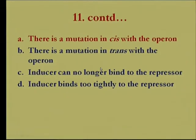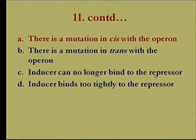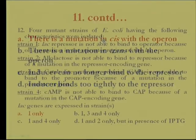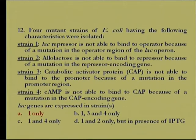Such oc mutations are generally cis in nature. Option B — mutation in trans — cannot be correct. Option C — inducer can no longer bind to the repressor — is not possible because the repressor is active but the inducer cannot bind, so induction will not occur even in the presence of inducer. Option D — inducer binds too tightly to the repressor — will not result in constitutive synthesis because the repressor can still bind the operator. The correct option is A: there is a mutation in cis with the operon.